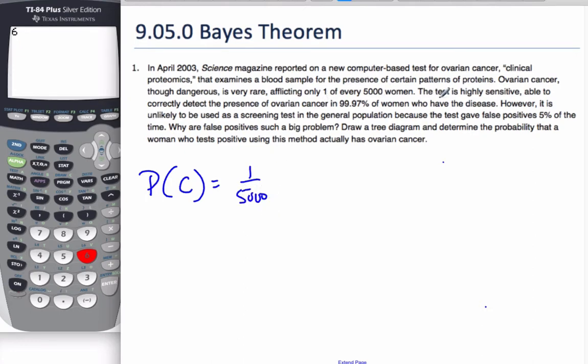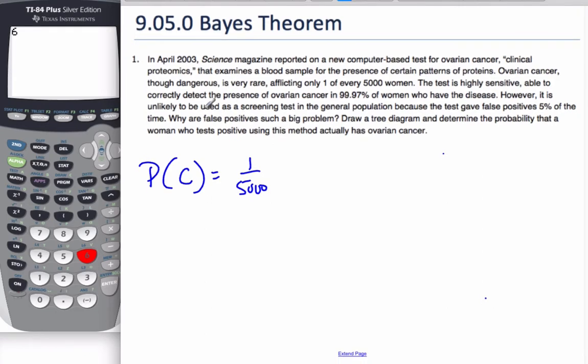The test is highly sensitive, able to correctly detect the presence of ovarian cancer in 99.7% of the women. So it's able to correctly detect it. So what does that mean? That means it correctly, so get a positive test, given that they have cancer already. That happens in 0.9997. That's what this statement here says. They've tested positive, given they have the cancer.